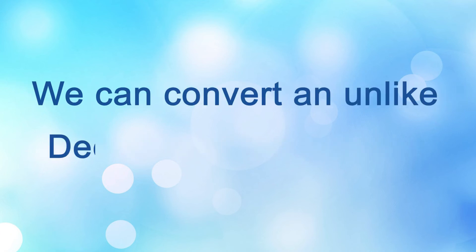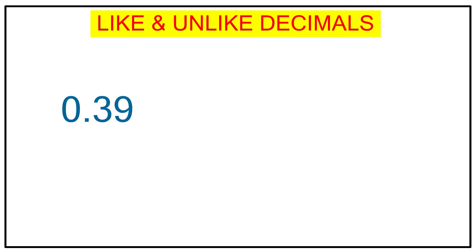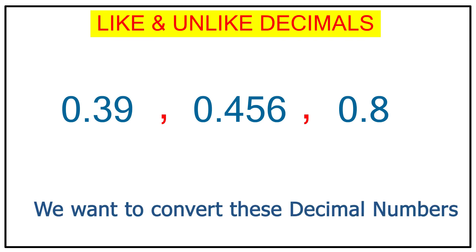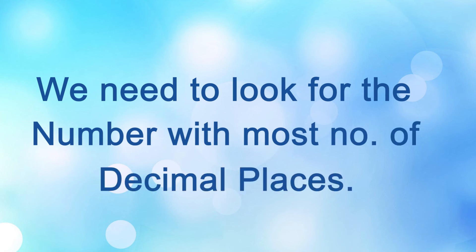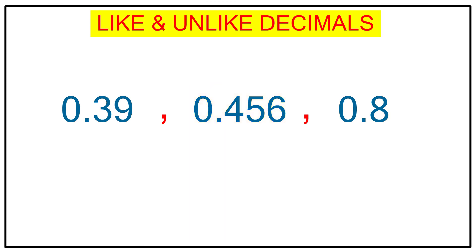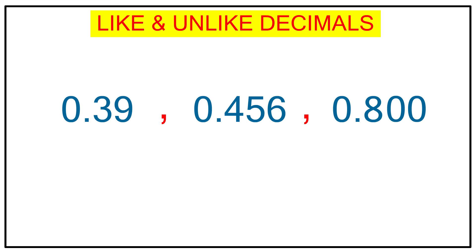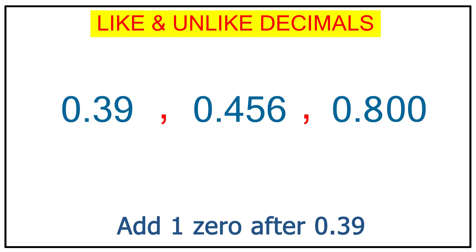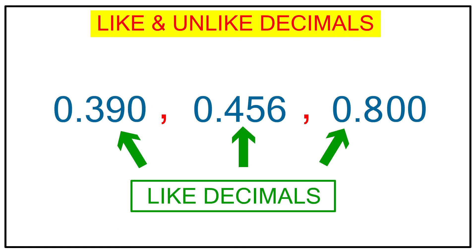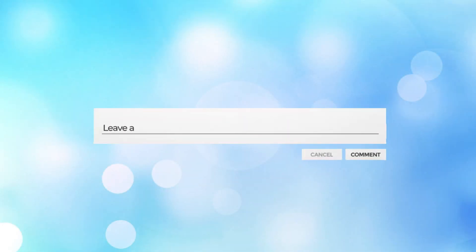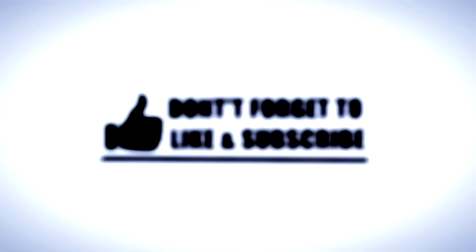If you have 0.39, 0.456, and 0.8 and want to convert them to like decimals, here are the steps. Step one: identify the number with the most decimal places — that is 0.456 with 3 decimal places. Then add two zeros after 0.8 to make it 0.800, and add one zero after 0.39 to make it 0.390. Now all numbers have equal decimal places and are like decimals. I hope you have understood — if you have any queries, please comment in the comment section.